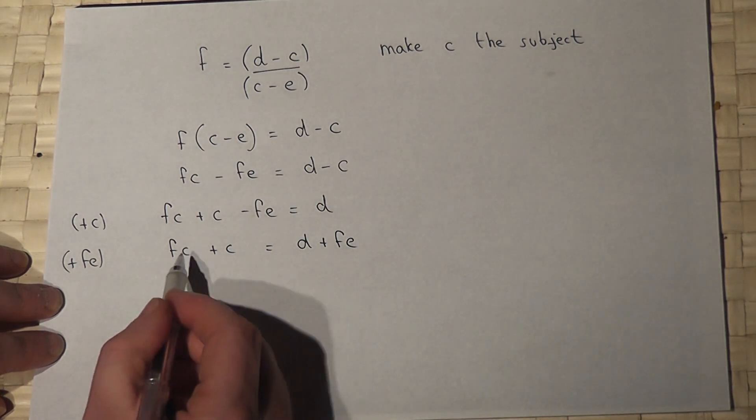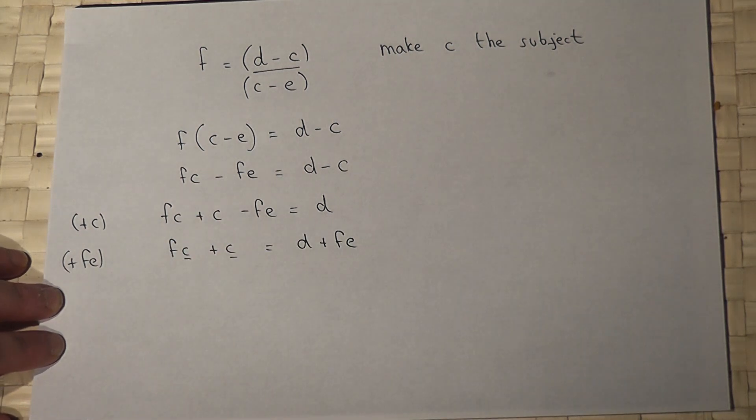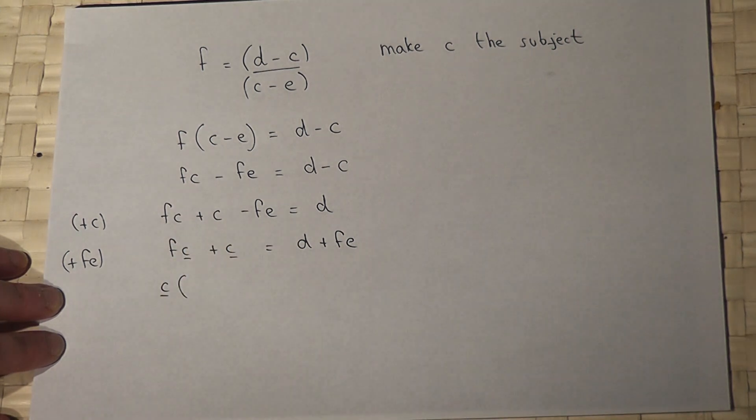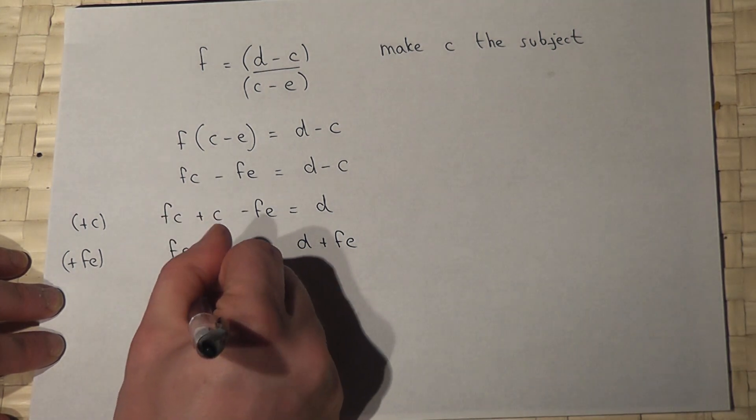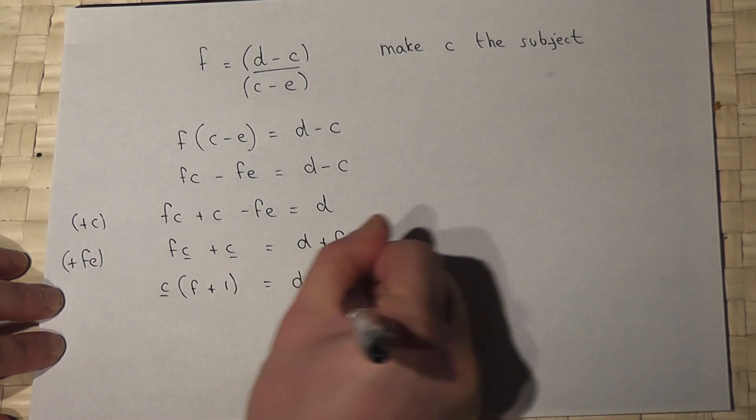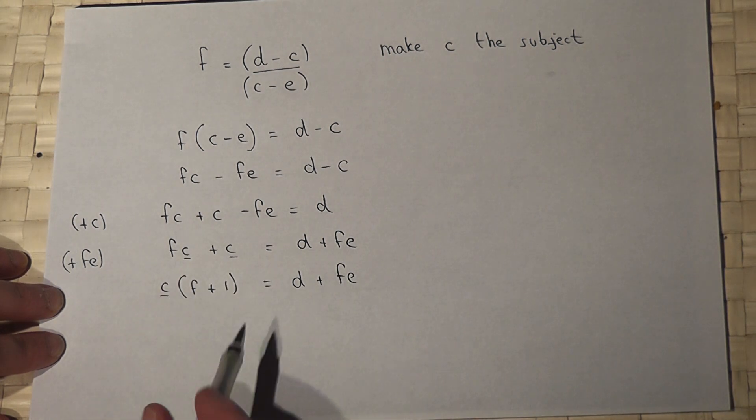Now C occurs more than once, so the next step is to factorise. So C bracket F plus 1 equals D plus FE. I've underlined the C just to emphasize, because I want C to be made the subject.